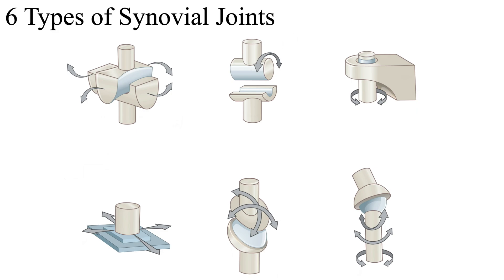Now there are six types of synovial joints. Synovial joints consist of articulating bones — bones that meet together — surrounded by joint capsules. Within their joint capsule there is synovial fluid, which reduces friction during joint movements by lubricating the joint's cavity. We will briefly cover each one today.